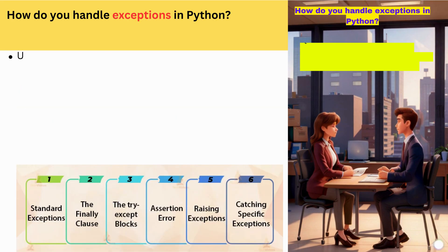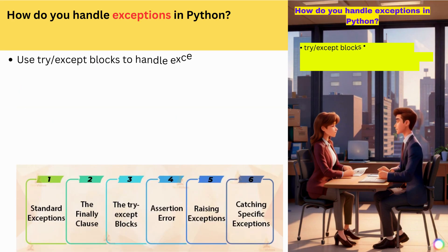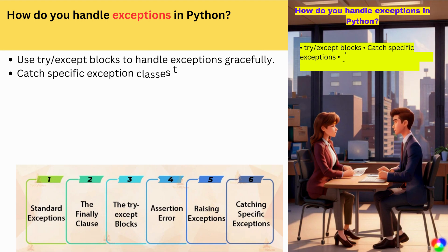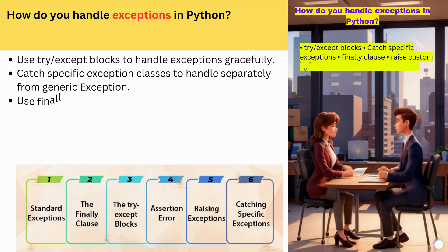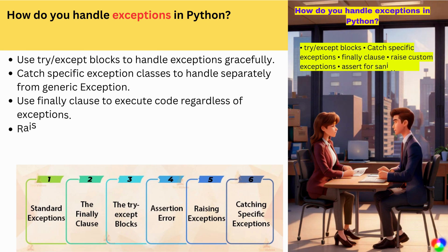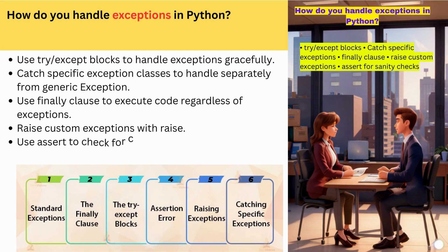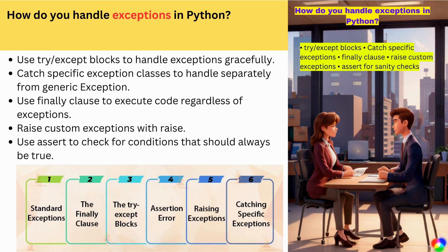How do you handle exceptions in Python? Use try/except blocks to handle exceptions gracefully. Catch specific exception classes to handle separately from a generic exception. Use a finally clause to execute code regardless of exceptions. Raise custom exceptions with raise. Use assert to check for conditions that should always be true.